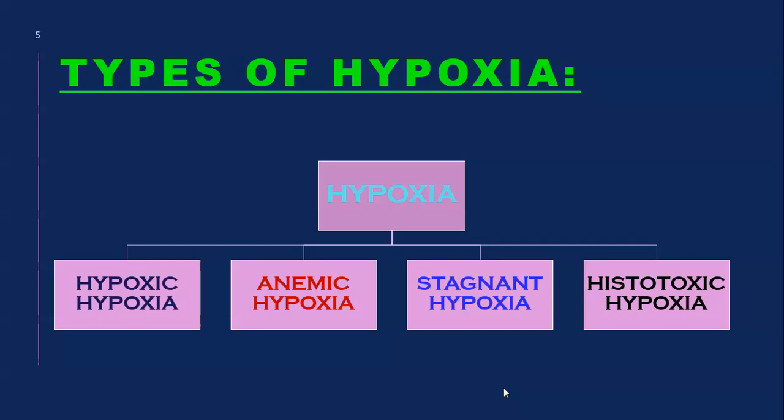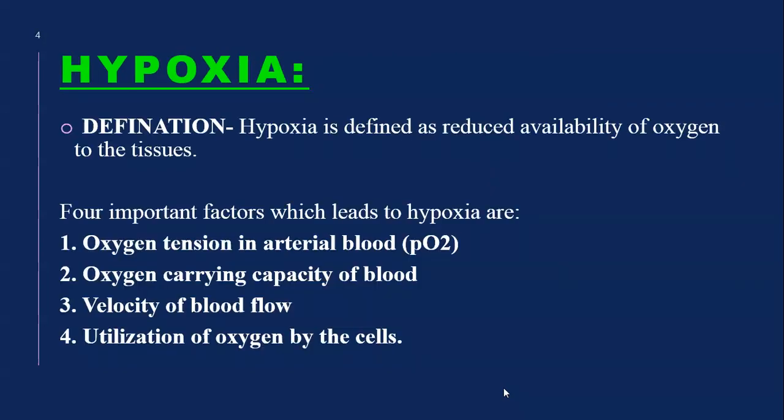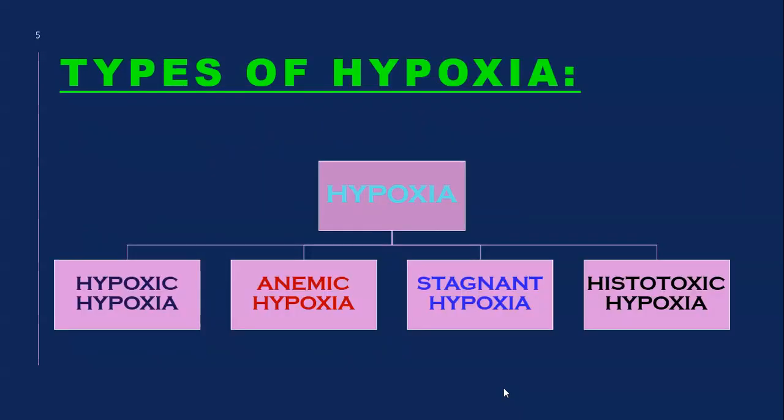Depending on these four conditions, there are four types of hypoxia: hypoxic hypoxia, anemic hypoxia, stagnant hypoxia, and histotoxic hypoxia — corresponding to the four factors of oxygen tension, oxygen carrying capacity, velocity of blood flow, and utilization or availability of oxygen for the cells. These can be remembered as H-A-S-H.